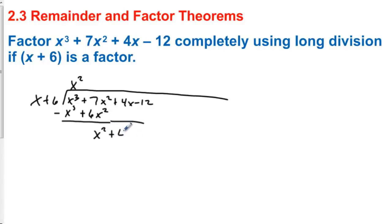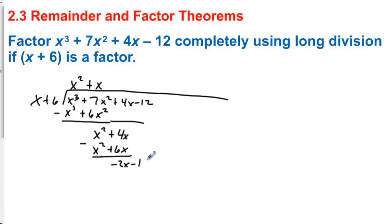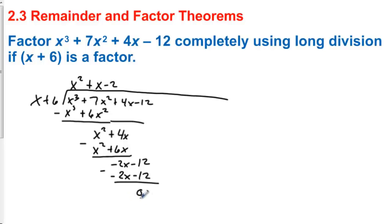And then we bring down the 4x. We multiply x times x to get x squared, and then we have plus 6x. In long division, we always subtract. 4 minus 6 is negative 2x, and then we have minus 12. To get negative 2x, we take negative 2 times x. And we have minus 12 because negative 2 times 6 is negative 12. When we subtract these two, we get a remainder of zero. So x plus 6 is a factor, and that's why we got a remainder of zero.